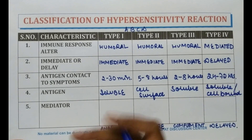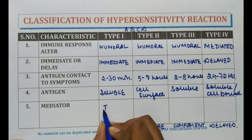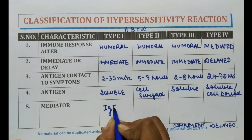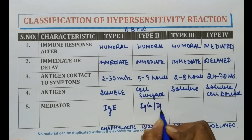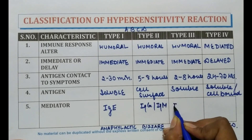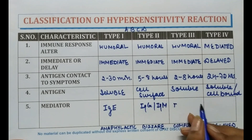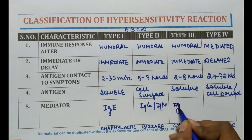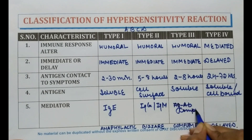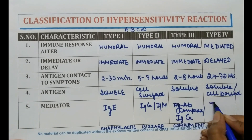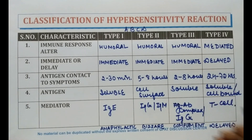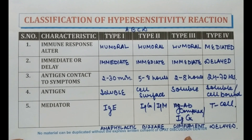The mediator involved in Type 1 reaction is IgE antibody. In Type 2, it is IgG or IgM. In Type 3, it is antigen-antibody complex involving complement or IgG. In Type 4, T cell lymphocytes are involved. Because of the complex type of reactions in Type 3, it is known as complement reaction.